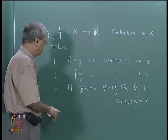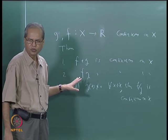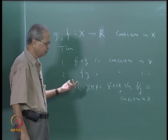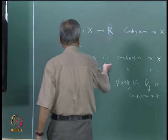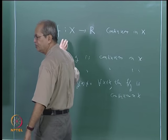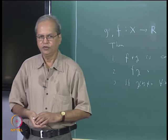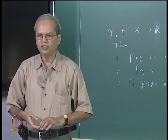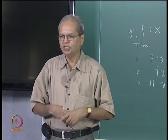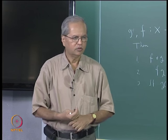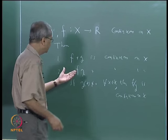As far as the proof of any of these things is concerned, it will follow from two things. To show that a function is continuous at all points in x, just take any arbitrary point, say x-naught. If that is an isolated point, then it is already continuous — there is nothing to be proved. If it is a limit point, then the required conclusion will follow from the corresponding theorem about limits.